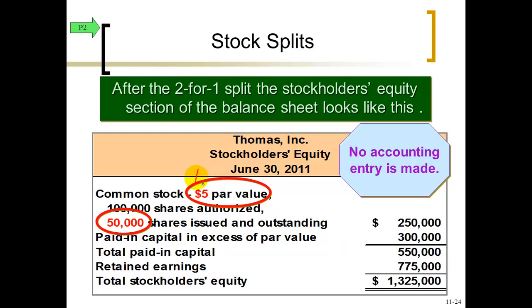In a stock split, the total in the common stock account stays the same — you doubled the shares and halved the par value, so none of the dollar totals change and no journal entry is needed. In a stock split you don't touch retained earnings. In a stock dividend you took money out of retained earnings and put it into the paid-in capital section. Those are the key differences.